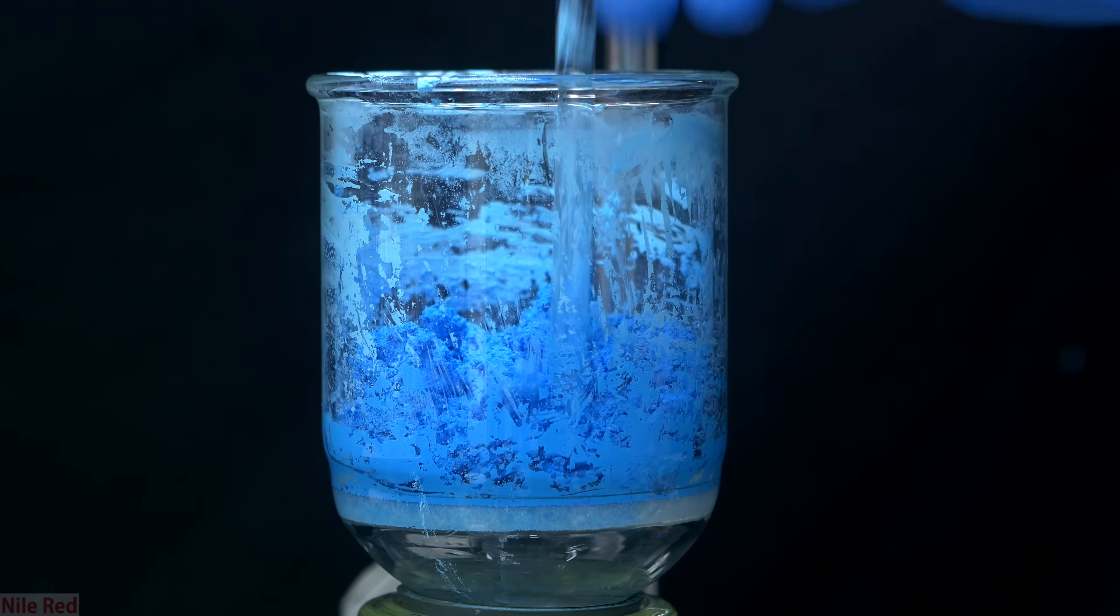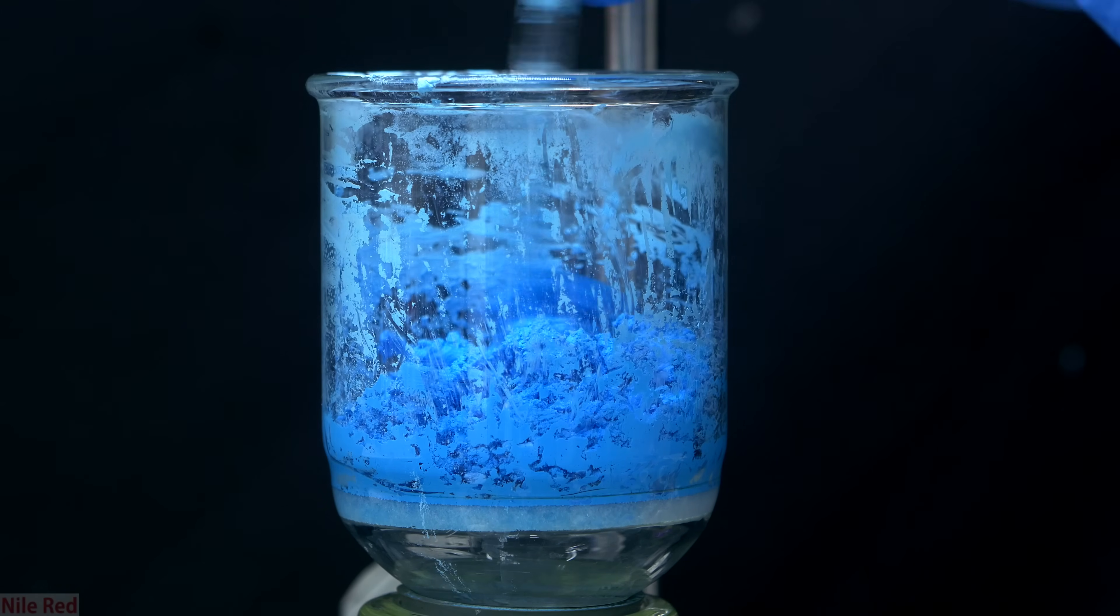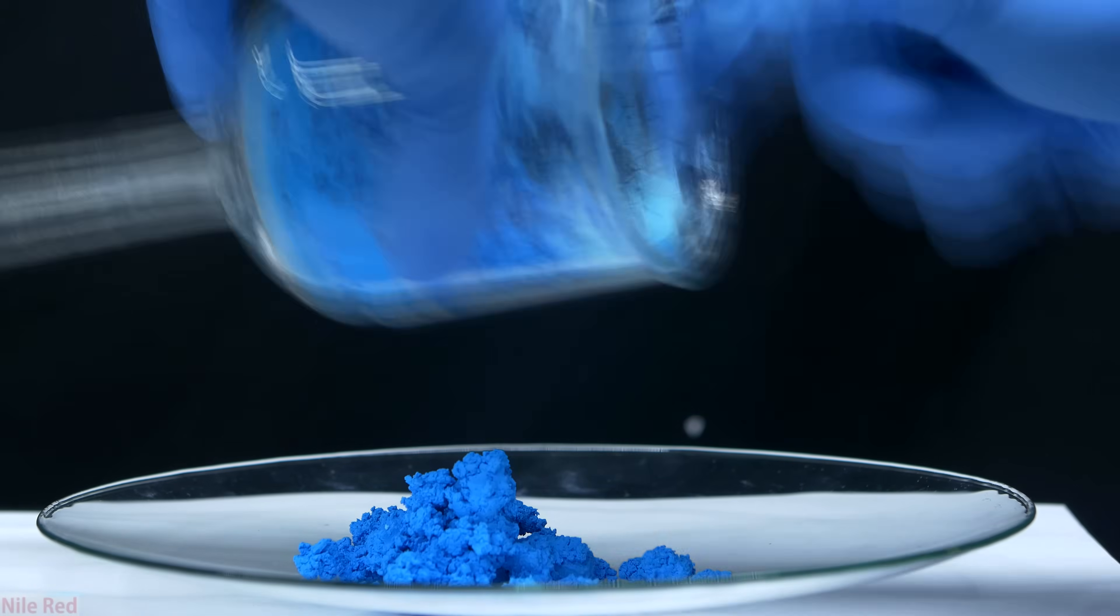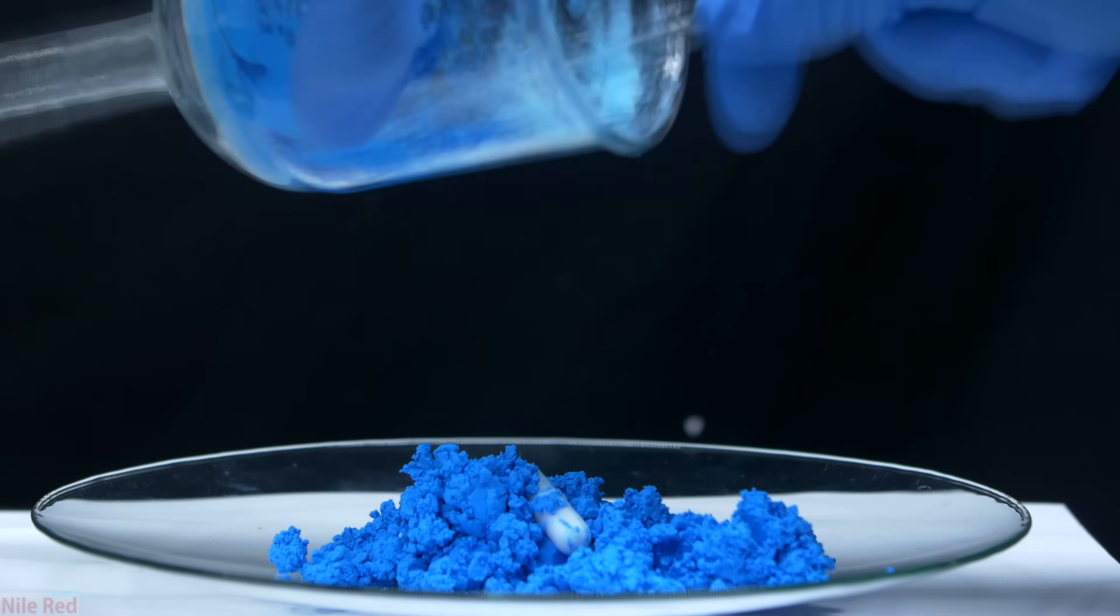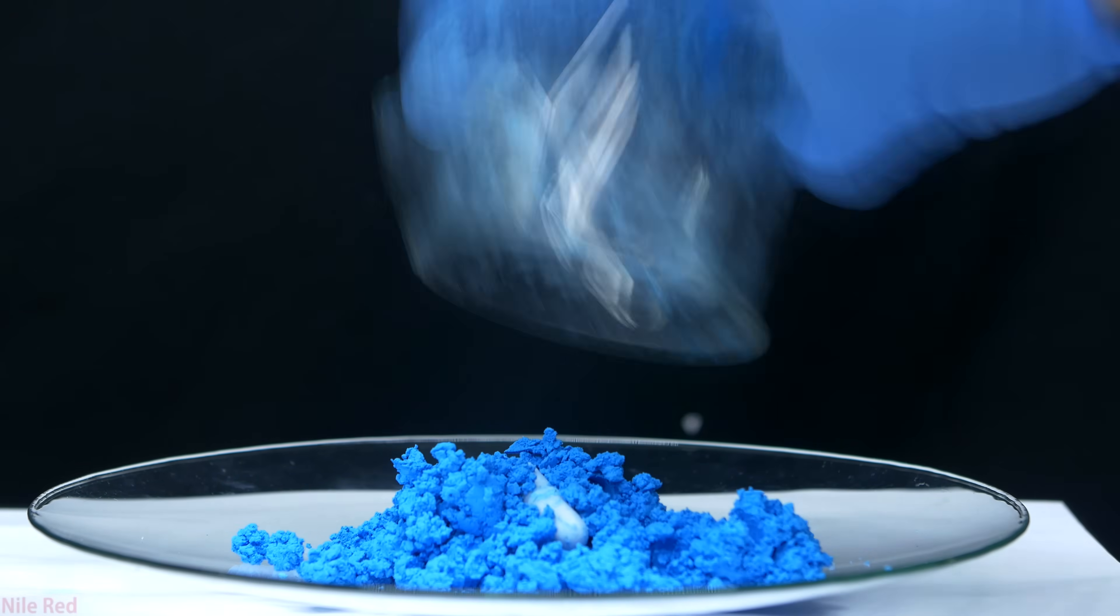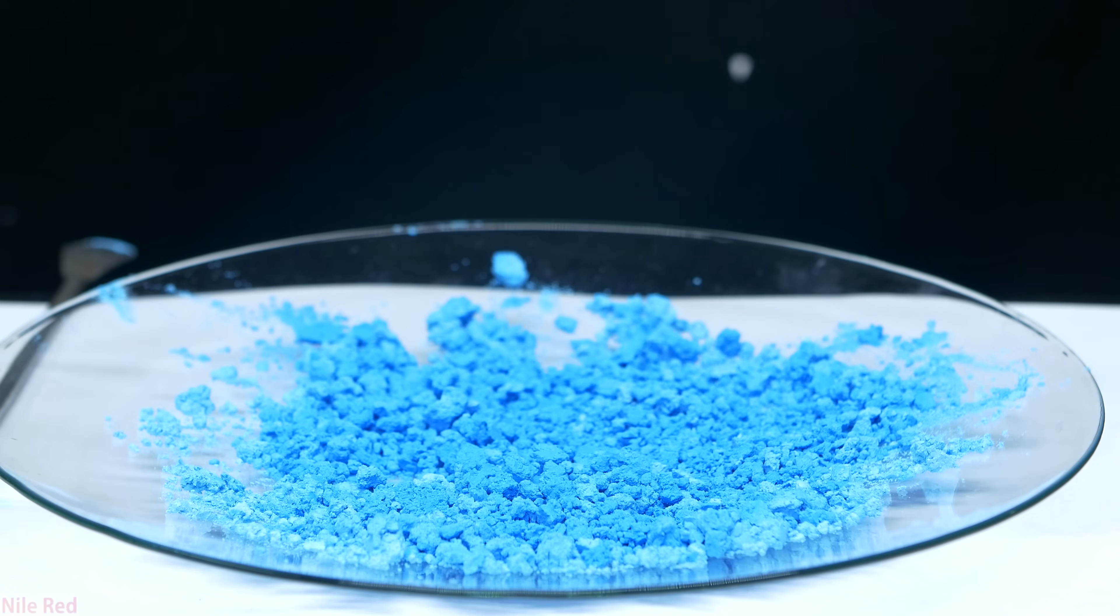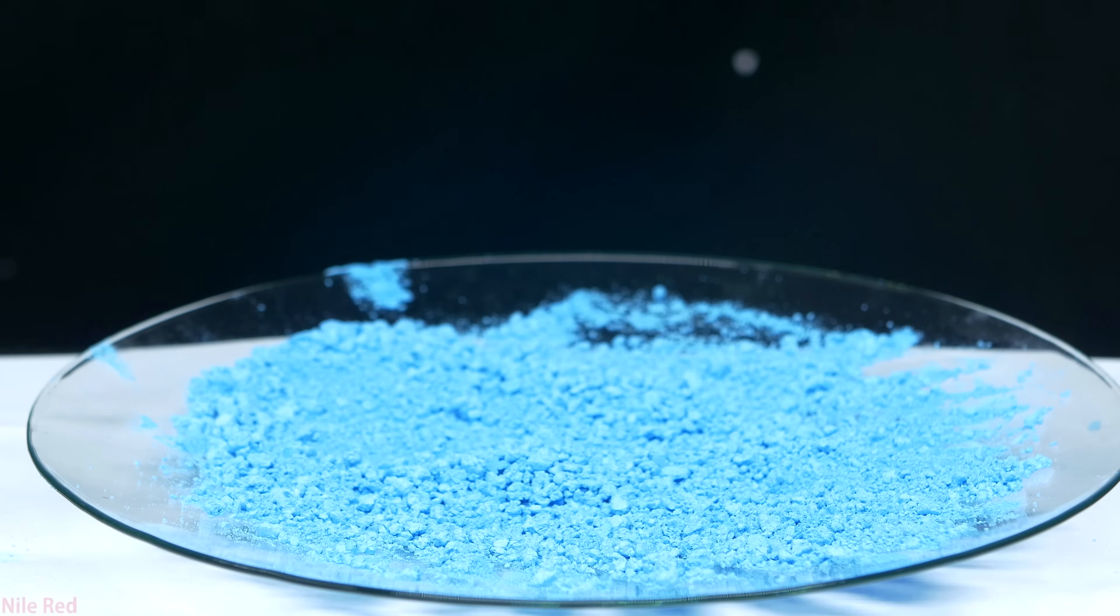After all of the acetone had been removed, we're left with a semi-dry paste. The rest of the acetone will be removed by evaporation, and to do this I transfer all of the copper hydroxide to a large dish. I left it out to dry, and every so often I came around with a metal spatula and broke up the larger chunks.